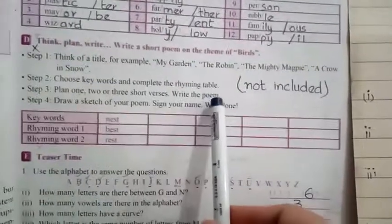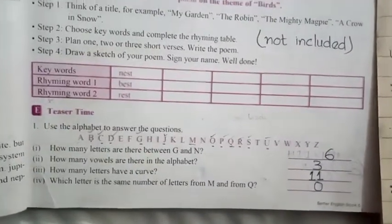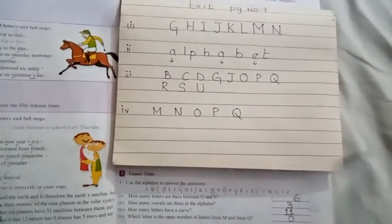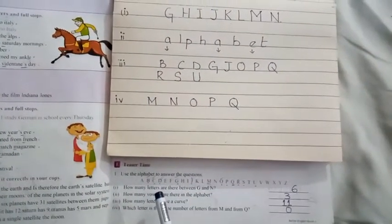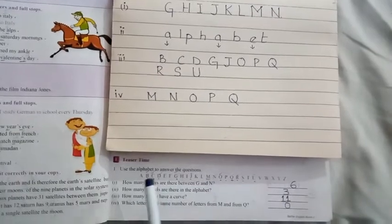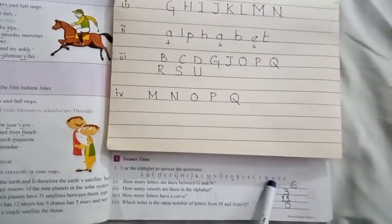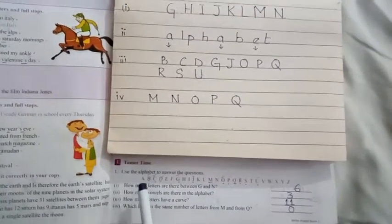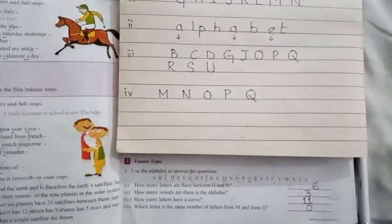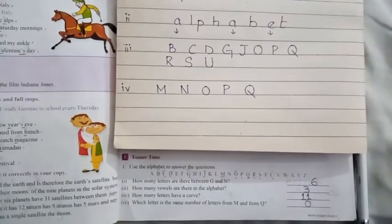Exercise D is not included and you will put a cross on it, and let's move towards exercise E. So boys, this exercise E on page number 7 is very interesting. It is more relating to the alphabets that we have in English language. So use the alphabet to answer the questions. Okay, now look at your question number one.